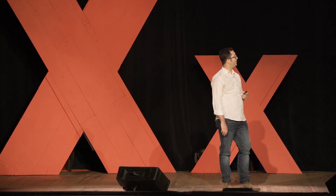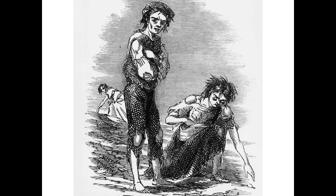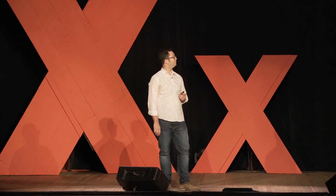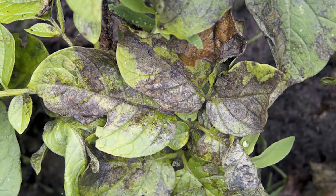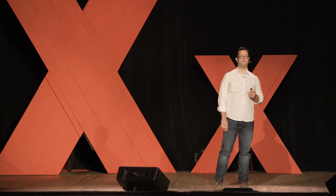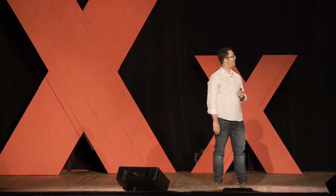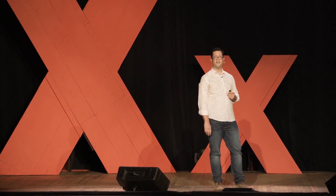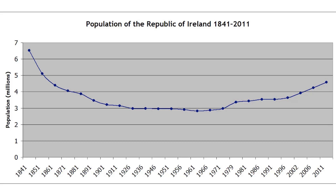1845 to 1852: the Great Famine of Ireland decimates the population. The proximate cause is a water mold that destroys and kills potato plants. One million people died. One million people emigrated. The remarkable fact is that the population of Ireland today is still lower than it was in 1840.